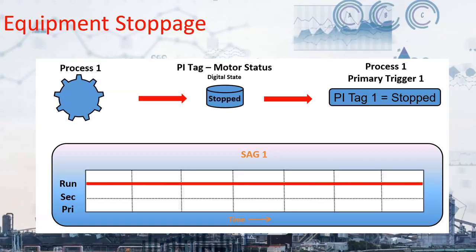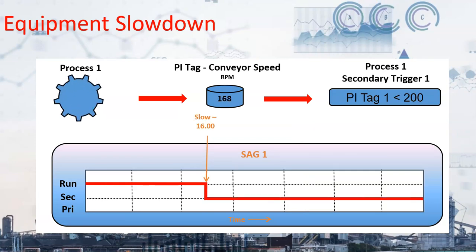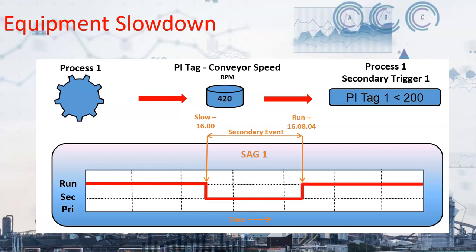Here we have an animation to visualize the event capture process. A process is running and then a Pi tag indicates the process has stopped — the system records the stop time. Once the Pi tag indicates the process has started again, the runtime is recorded and the event is closed, triggering the event to appear in the events page for the operator to classify. A similar animation shows the slowdown event: the event is generated when process throughput drops below the slowdown threshold — in this case, below 200. The event duration is captured the same way as a downtime event, but also considers the rate loss to determine a weighted or equivalent duration. For instance, if the target rate was 400 tons per hour and the process produced 200 tons per hour for one hour, this would have the equivalent throughput impact of being down for 30 minutes, giving a weighted duration of 30 minutes for that slowdown event.